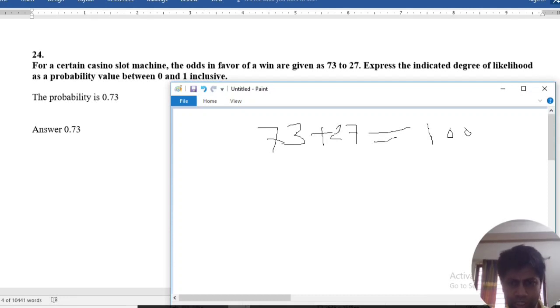Express the likelihood ratio between odds in favor. So what's equal to 73 divided by 100.